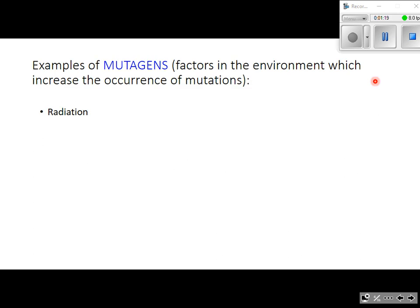Here are some examples of mutagens — outside factors in the environment which increase the occurrence of mutations. We all know from sci-fi movies that exposure of the human body to radiation can cause mutations, and radiation takes many forms. X-ray radiation is one we're all familiar with.